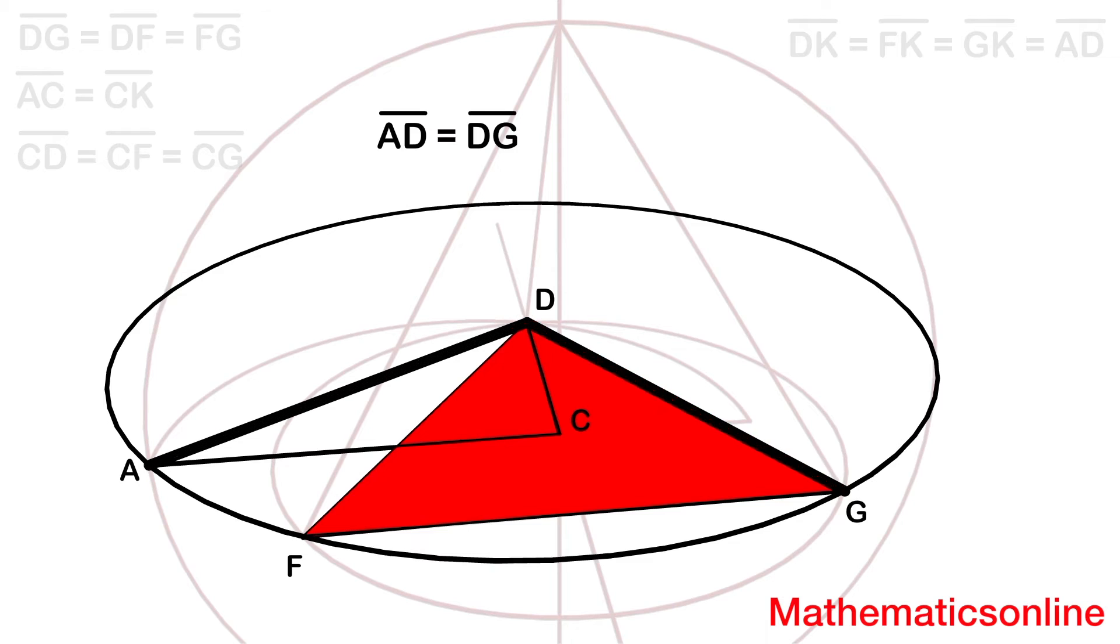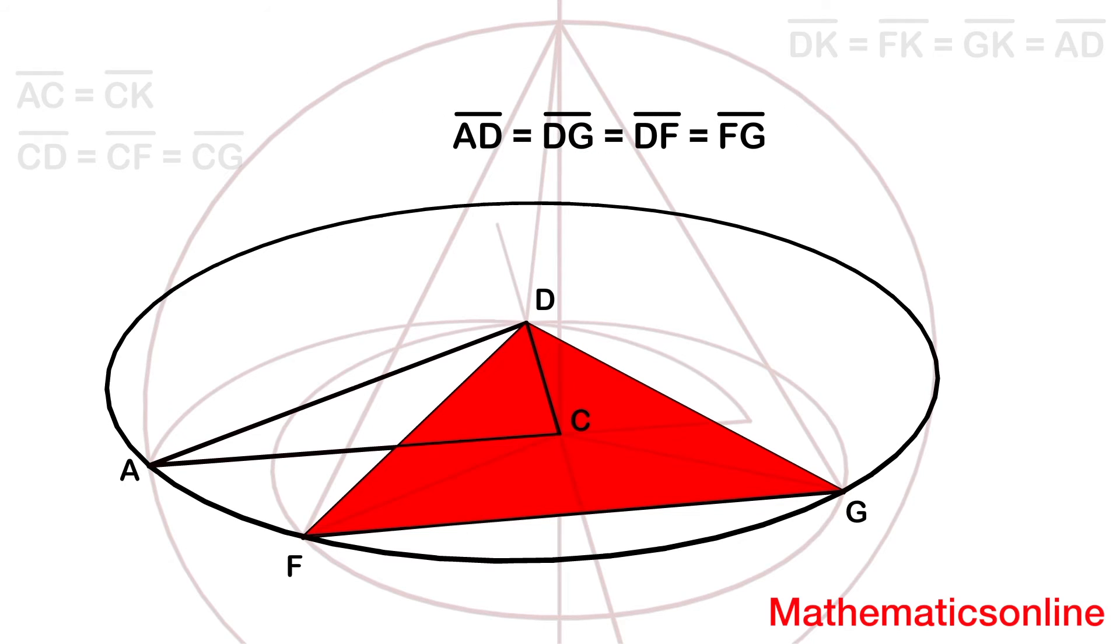Finally, if we construct this circle, the radius AD is equal to DG. And DG, DF, and FG represents the sides of the triangle plane.